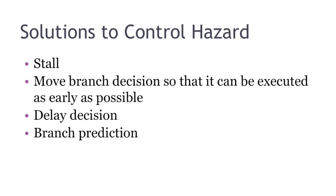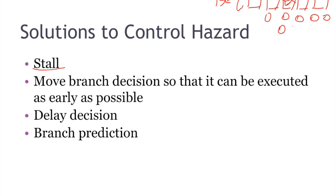So what are some solutions to the control hazard? The first one is the easiest one. We just add some stalls in between the branch instruction and the following instruction. So say if we have a branch instruction and the branch logic is in the execution stage, we just simply add two lines of bubbles. And the instruction fetch stage of the next instruction will start from here. So notice that the instruction fetch is after the execution stage. So the control hazard can be solved this way.